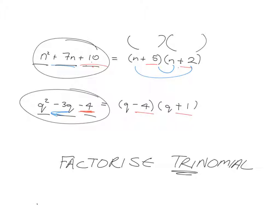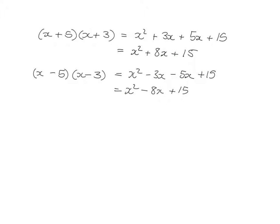But these ones were easy because I already gave you a clue - I gave you the first bracket. So what we want to do is be able to go straight from the trinomial to the brackets without being given any clues. In order to understand how we get there, we're going to have a little look at multiplying out again, because factorization is just the opposite of multiplying out.